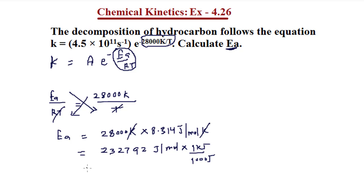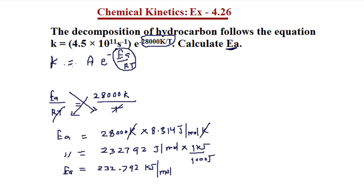Dividing this value by 1000 gives us 232.792 kilojoules per mole. This is the energy of activation value. We have been able to calculate Ea by using the Arrhenius equation, comparing it with the given equation, and then solving for Ea.